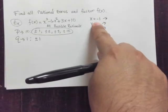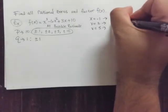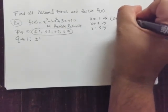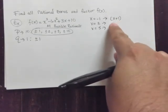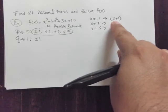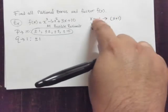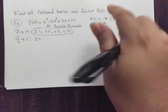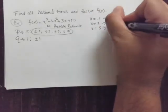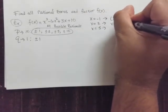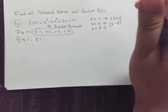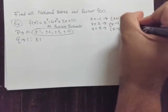if x equals negative 1, then it had to have come from x plus 1 in this case. So think about it. If you take the zero factor property, set x plus 1 equal to 0, well, x equals negative 1. The same thing here, you take it backwards. So in this case, x minus 2. And in this case, x minus 5.